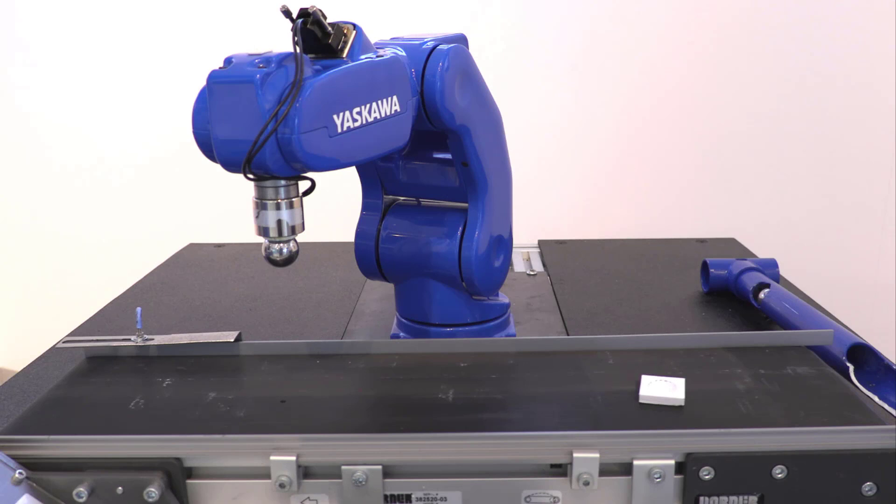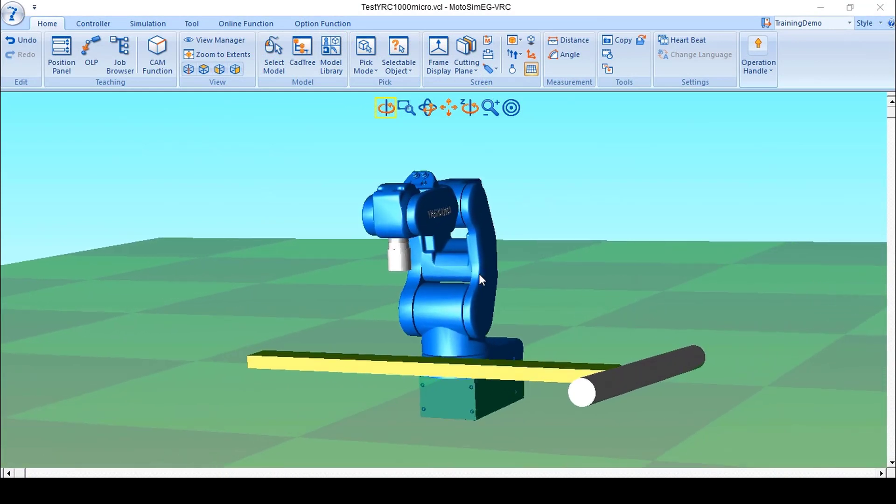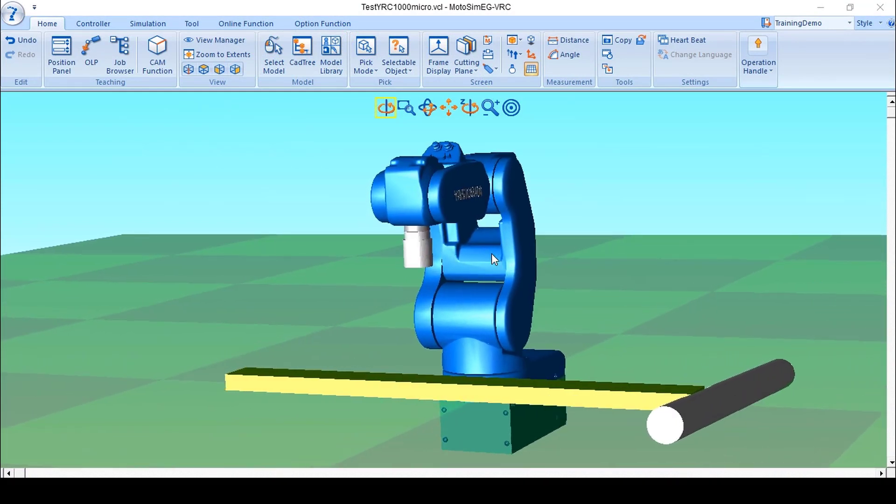I'll use the Moto Mini robot to demonstrate an example of interference zones with an interference zone right above the conveyor. It will be easier to visualize this interference zone using the MotoSim software.